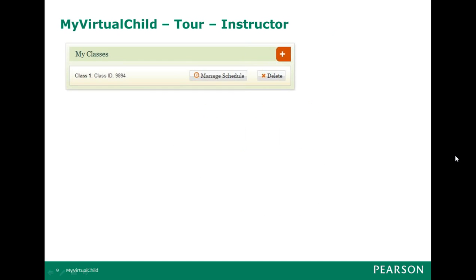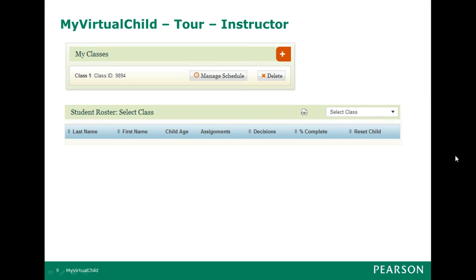As an instructor, you can set up a class or multiple classes. Students then get a class ID that they can use to join that class. This divides them up so you can look at them in a more granular level, or separate semester-on-semester or different courses. In the gradebook, when students enrol and start raising their child, you can see the student's name, the age of the child, where it's at, the decisions they've made, how complete they are, and if they have reset the child. If you see most of your class getting close to 50% or 67% but some aren't, that's a good way to quickly check in on them.